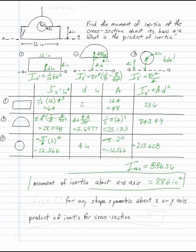The second thing asks us to find the product of inertia. The product of inertia, IXY, is equal to zero for any shape symmetric about the x-axis or the y-axis. In this case, what I have is a line of symmetry perpendicular to the AA axis. Because my cross-section is symmetric about a line perpendicular to the AA axis, the product of inertia for the cross-section is equal to zero.